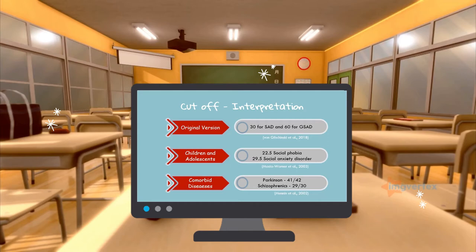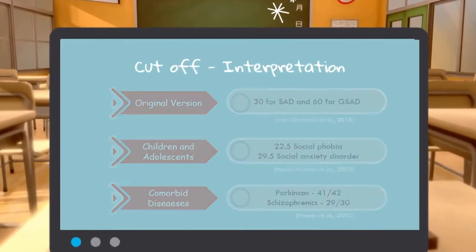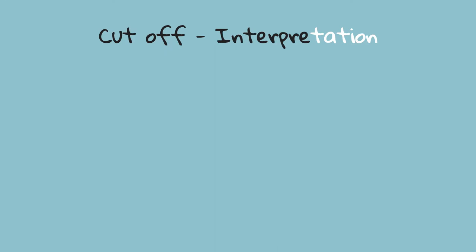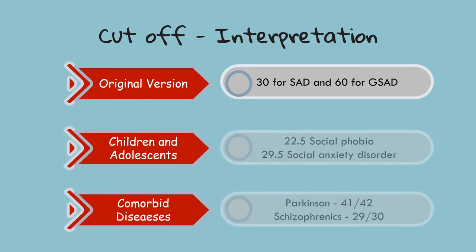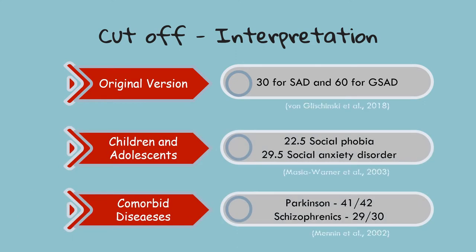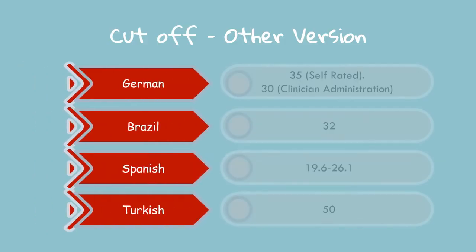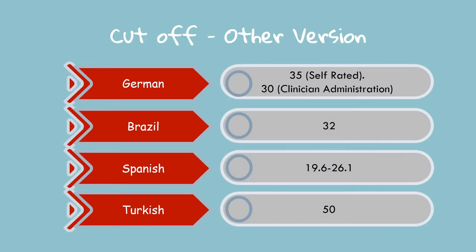Interpretation cut-off: since this assessment comes in various versions, the interpretation for each version is different. For the original version, a score of 30 indicates social anxiety disorder, and 60 indicates global social anxiety disorder. Other version interpretations, as well as comorbid disease cut-offs, are also presented here.